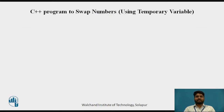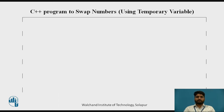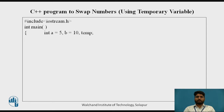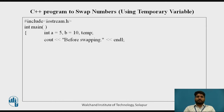The first program will show how to swap numbers using a temporary variable. We are using #include iostream and int main — all of this is explained in another video. I am taking 3 variables and assigning the values: int a equal to 5, b equal to 10, then I am taking the third variable as temporary, that is TEMP. Cout before swapping: the numbers will be a equal to 5 and b equal to 10.